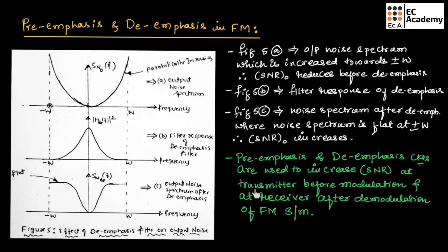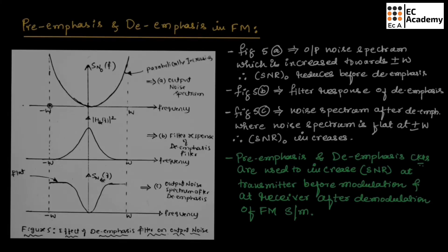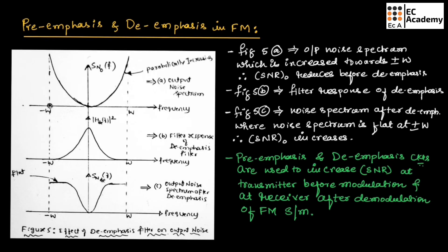At the transmitter end, we will be using pre-emphasis to increase the signal-to-noise ratio of the FM system. This is about pre-emphasis and de-emphasis in FM systems. Hope you have understood the topic. Thank you.